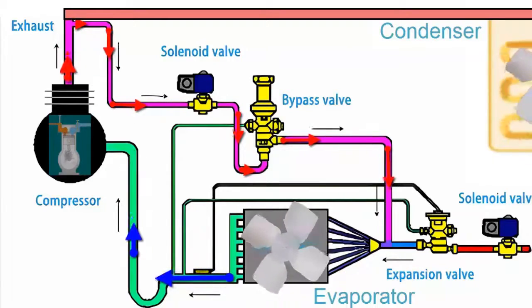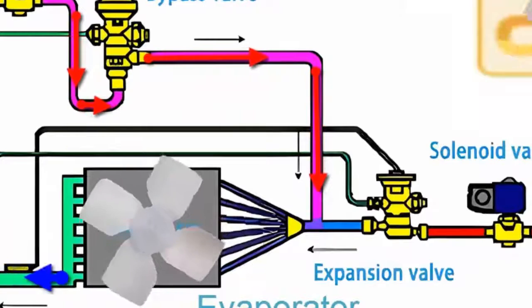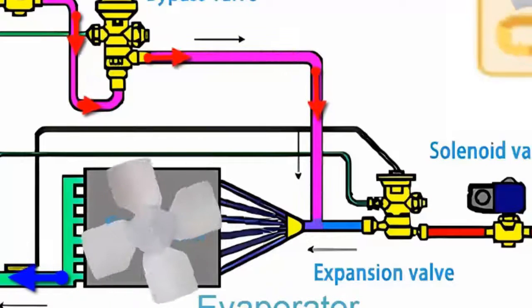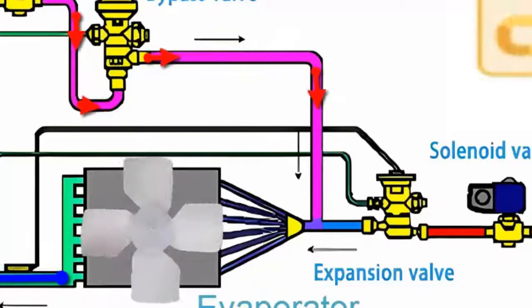The first hot refrigerant arriving at the evaporator encounters a very low-temperature part of the system, which can cause the refrigerant to undergo a rapid phase change from superheated vapor to saturated liquid.